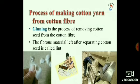Ginning is done by passing harvested cotton through a machine called roller ginns. Ginning was traditionally done by combing manually and also done by hand. The fibrous material left after separating cotton seed is called lint. Lint is nothing but cotton fiber.